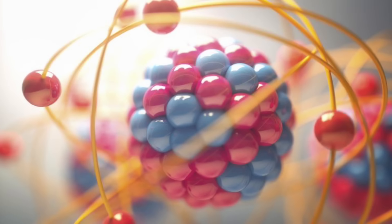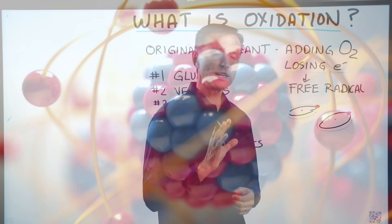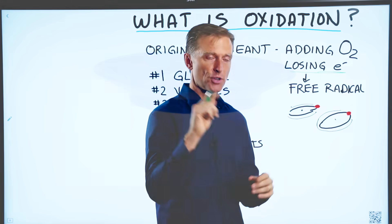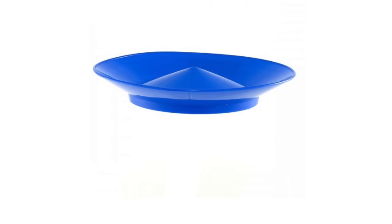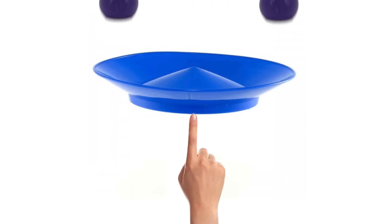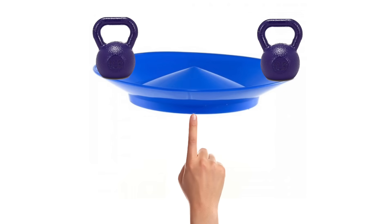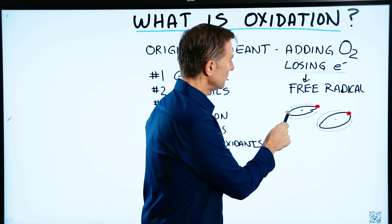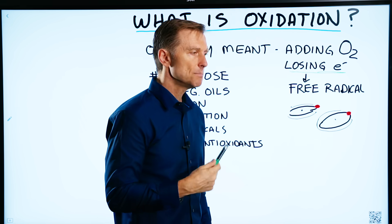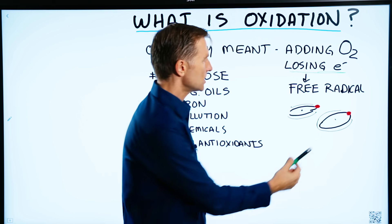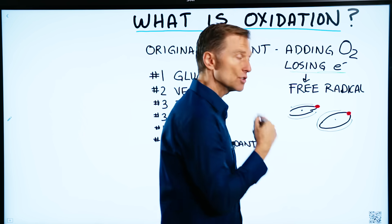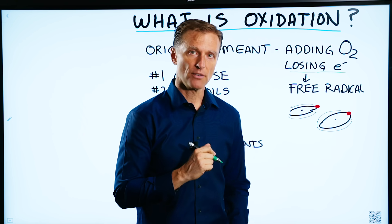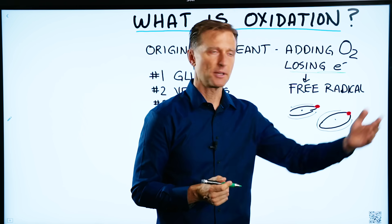These atoms have paired electrons. As an example, you have this plate and you're spinning it on your finger, and it has two weights on it, and you can balance that plate as you spin it. But a free radical is when you remove an electron and you have what's called an unpaired electron — so it just has one weight on a plate and you're spinning this thing. Well, it's going to fly off and break something.